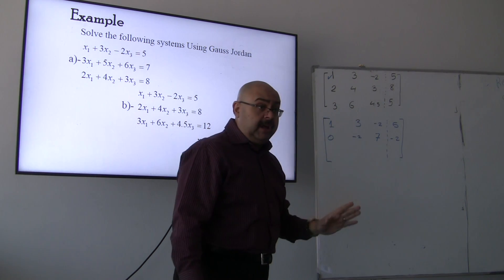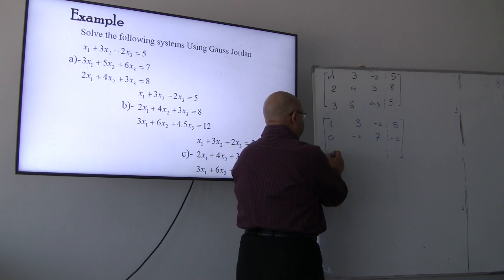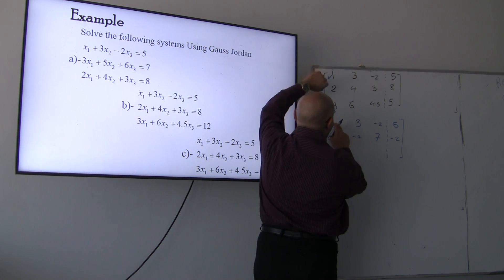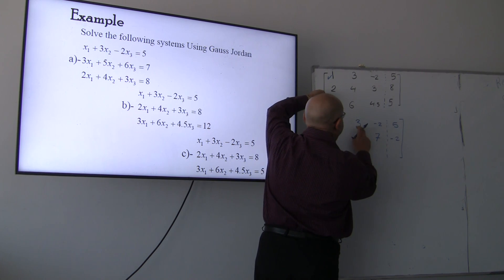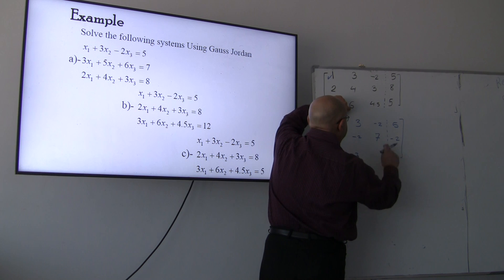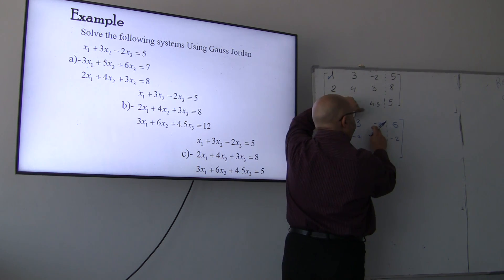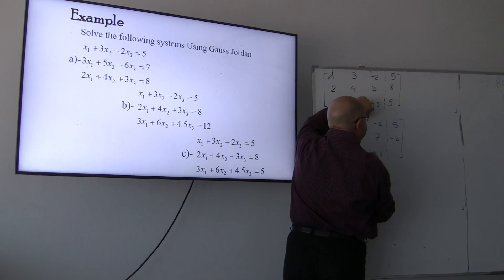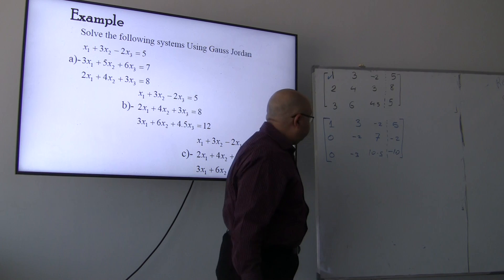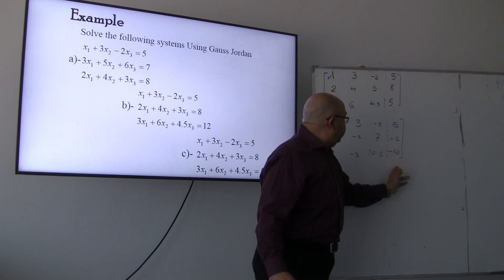In a similar manner, same way, I need this number to equal to 0. So I multiply by negative 3. Negative 3 plus 3 is equal to 0. Negative 3 times 3, negative 9 plus 6, so it's going to come up to negative 3. Negative 3 times negative 2 is going to be positive 6, plus 4.5, so it's going to come up to 10.5. Negative 3 times 5, negative 15, plus 5, so it's going to be negative 10.